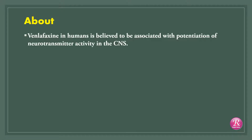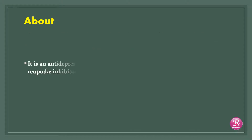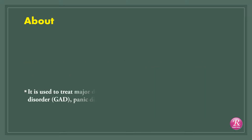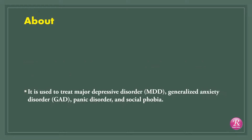About Venlafaxine. Venlafaxine in humans is believed to be associated with potentiation of neurotransmitter activity in the CNS. It is an antidepressant medication of the serotonin norepinephrine reuptake inhibitor, SNRI, class. It is used to treat major depressive disorder (MDD), generalized anxiety disorder (GAD), panic disorder, and social phobia.